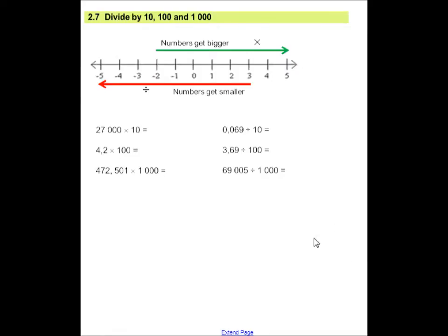What happens when I divide by 10, 100, or 1,000? Now remember, when I multiplied, my numbers became bigger. When I divide, my numbers get smaller. This only applies when we are multiplying and dividing by whole numbers. So, 27,000 multiplied by 10, 10 has got one zero, I am going to add another zero. Remember to group your numbers in threes, so it is 270,000. When I multiply by 100, it is a decimal, my comma must move two places to the right, so my answer is going to be 420. When I multiply a decimal by 1,000, my comma is going to move three places to the right, and I am going to get 472,501.